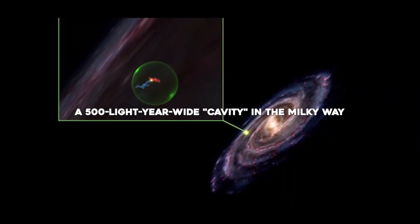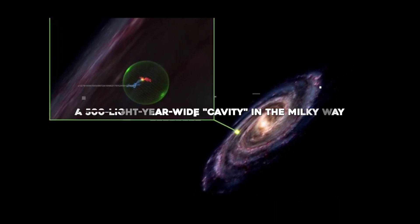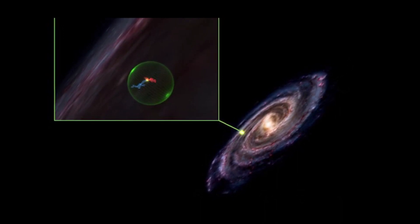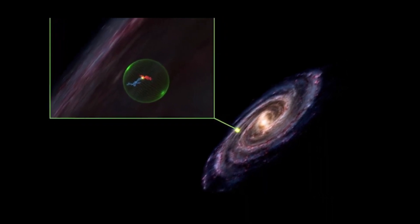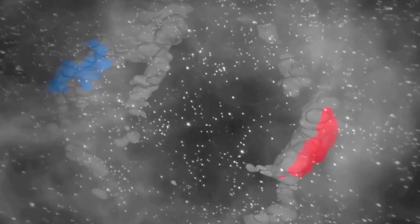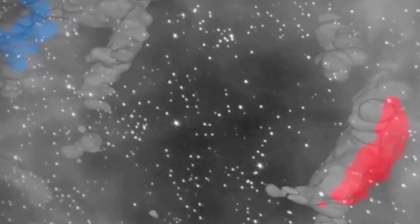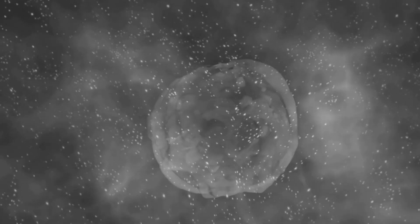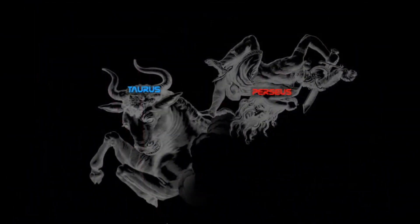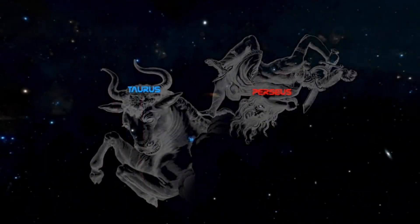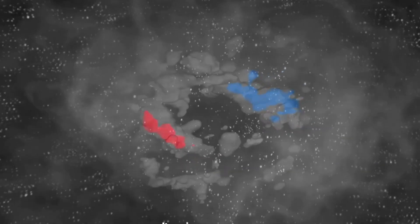A 500-light-year-wide cavity in the Milky Way. Two clouds of gas, both alike in dignity, appear side by side in the fair Milky Way. Known as molecular clusters, these enormous provinces of star-forming gas stretch across the sky, seeming to form a bridge between the constellations Taurus and Perseus. It's a celestial tale of star-crossed love. And according to recent research, it's also an enormous optical illusion.